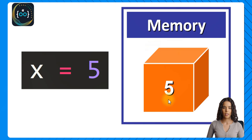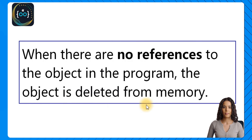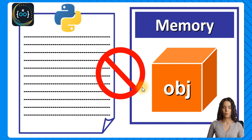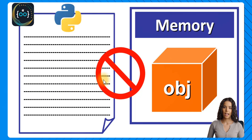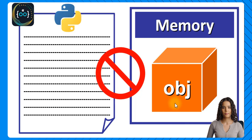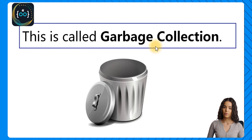So when we assign a value to a variable, we're actually assigning a reference to the memory location where this object is stored. Somewhere in memory we have the object 5, and the variable knows where to look for that particular object. When there are no references left to the object in the program, the object is deleted automatically from memory. This occurs when the object is no longer accessible by the program.